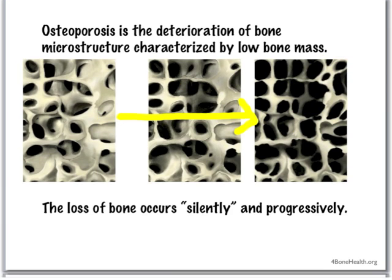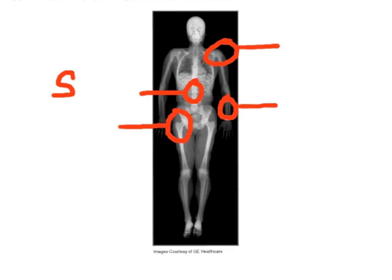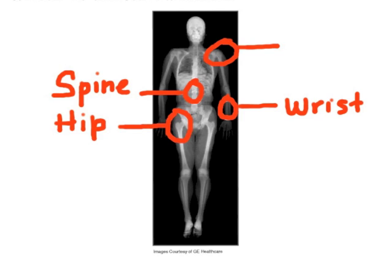This loss of bone occurs silently and progressively. You don't feel it, you can't see it. But as the bones become more porous and fragile, the risk of breaking a bone increases. It's circled on the four common sites of fracture: the spine, hip, wrist, and shoulder — but any bone may be susceptible.